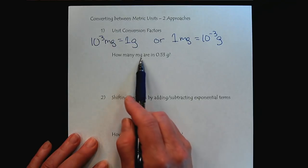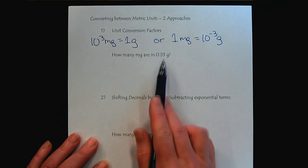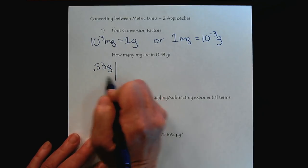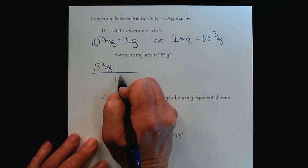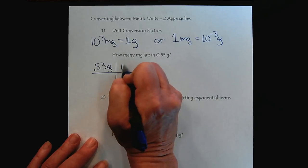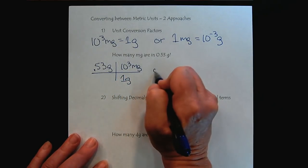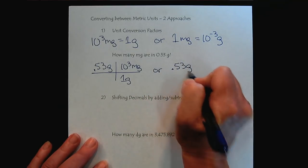So how many milligrams are in this many grams? So we have 0.53 grams, and for every gram we have a thousand milligrams. Or, we start with the same way, but I'll do it the other way.